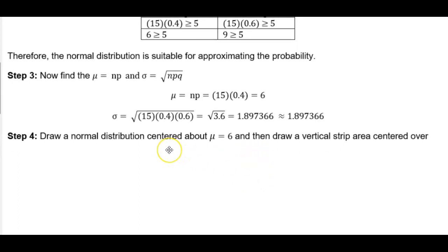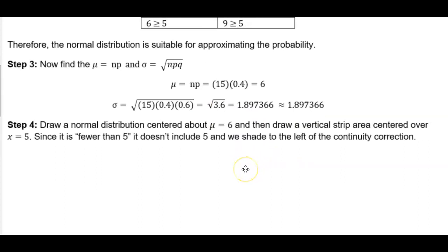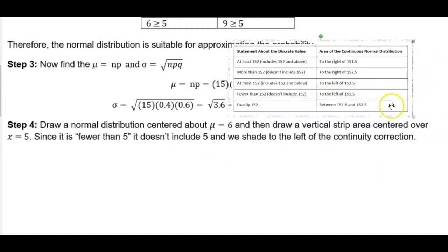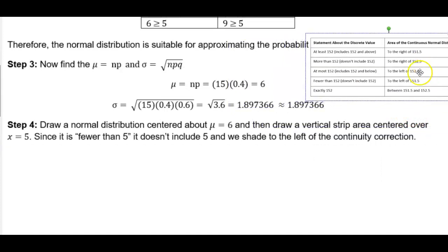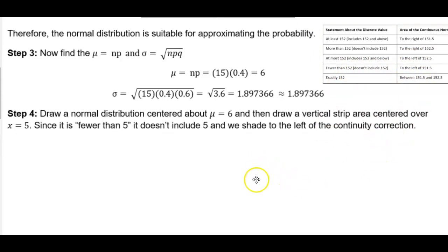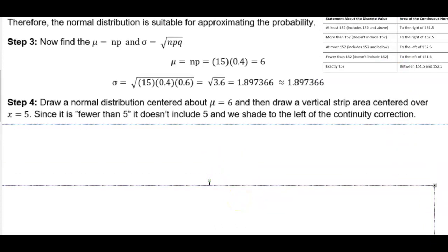Now we want to draw a normal distribution centered about the mean, which is equal to 6. Then draw a vertical strip area centered over x equals 5. Since it is fewer than 5, it doesn't include 5, and we shade to the left of the continuity correction. Remember: since we're looking at fewer than, it's a strict inequality — it doesn't include the value — so it's going to be to the left of the continuity correction. Let's go ahead and draw our bell curve.